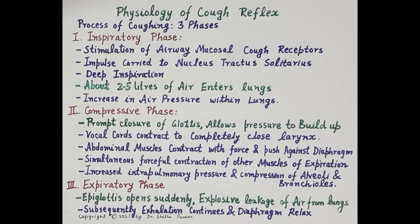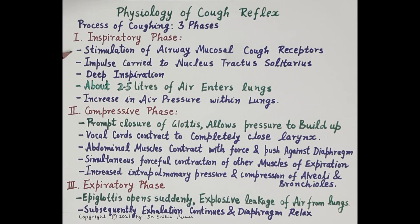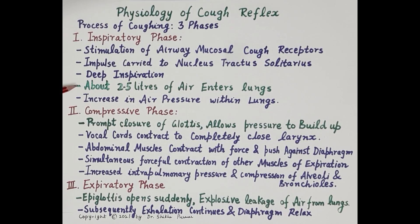The process of coughing is completed in three phases. The first is the inspiratory phase: following stimulation of airway cough receptors by irritants, impulses are carried to the nucleus tractus solitarius, followed by deep inspiration. About 2.5 liters of air enters the lungs, increasing air pressure within the lungs. The second phase is the compressive phase, where air pressure within the lungs further builds up due to the closure of the glottis, compressing the alveoli and bronchi.